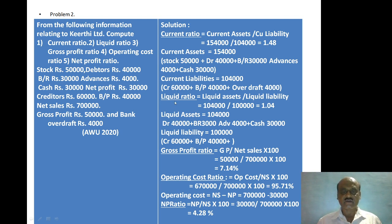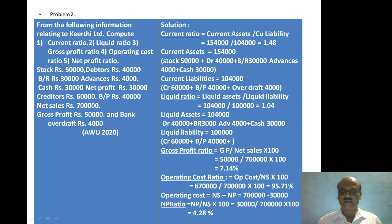Next, liquidity ratio = liquid assets divided by liquid liabilities. Liquid assets = current assets minus stock = debtors + bills receivable + advances + cash = Rs. 1,04,000. Liquid liabilities = current liabilities excluding bank overdraft = creditors + bills payable = Rs. 1,00,000. Applying the formula: 1,04,000 divided by 1,00,000 = 1.04 is the liquidity ratio.